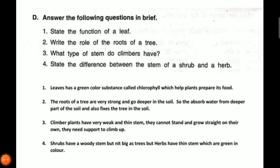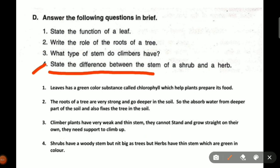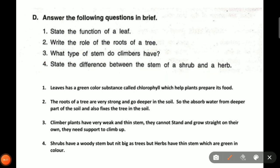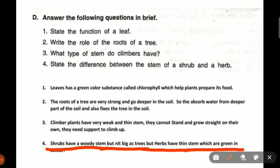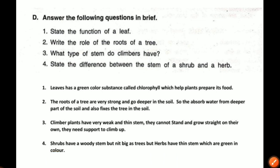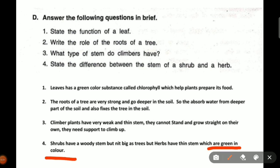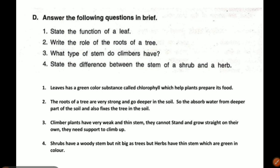Fourth question: state the difference between the stem of a shrub and a herb. Shrub stems are woody and strong — not as big as trees, but small and very strong. But herbs have a thin stem which is green in color.